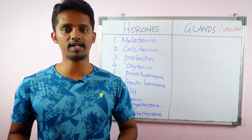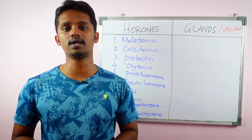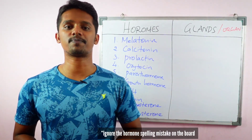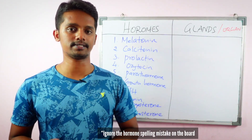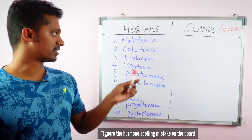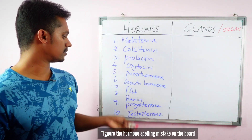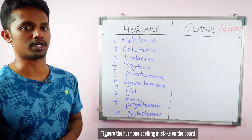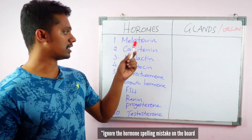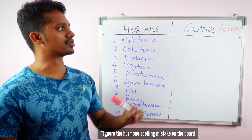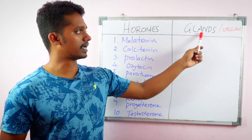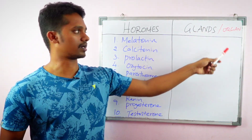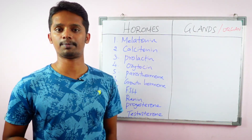Hello everyone. In this video, we will talk about hormones produced by glands. If you look at this, there are names of 10 hormones. These 10 hormones are produced by various glands or organs.